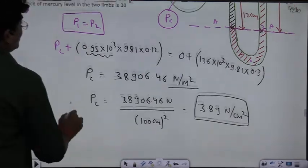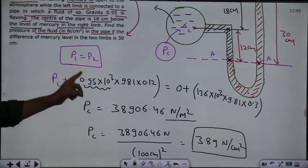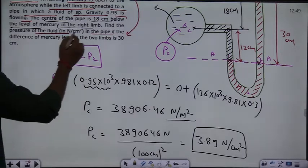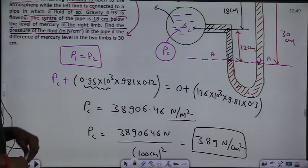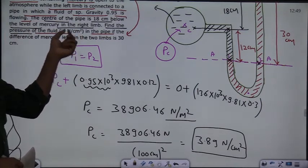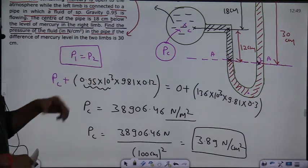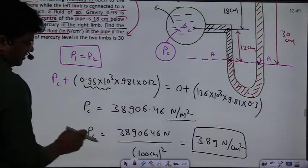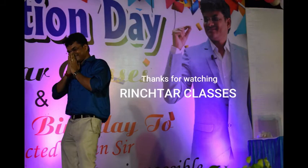Remember: whenever pressure is given or asked throughout fluid mechanics, by default it is always gauge pressure. Unless the question specifically asks to find the absolute pressure, you always report gauge pressure. Only when absolute pressure is asked do you add atmospheric pressure to the gauge pressure.